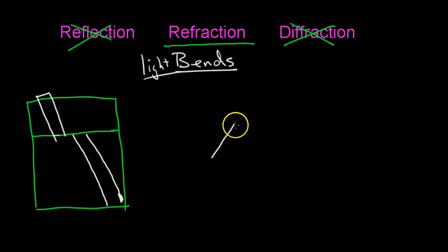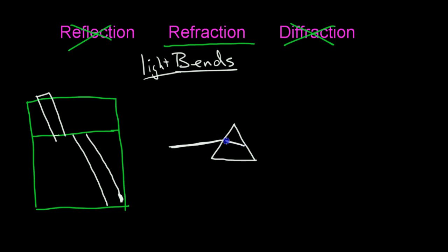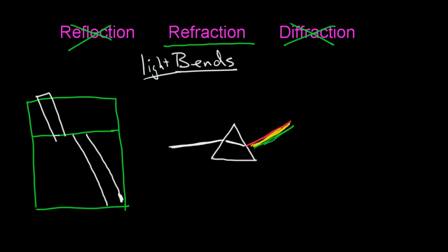Another example is a prism. We shine white light in, and then it comes out as red, orange, yellow, green, and blue. So it goes through a prism and it breaks up the light — it bends the light, but it also breaks it up — and you get the colors of the rainbow. So that's also refraction.